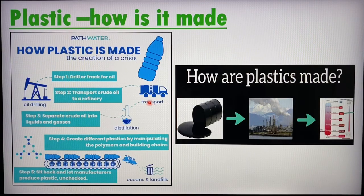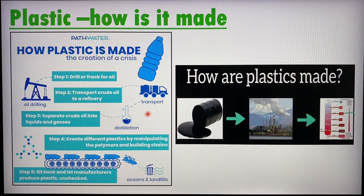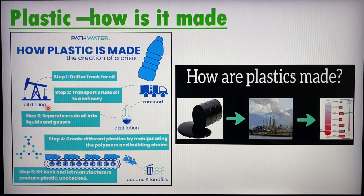Now, how is plastic made? Many students have asked me this and it's not exactly covered in school, so I decided to cover it here. First, we have to drill or get oil from the ground, and then the oil is transported to factories or industries where they do some processing to the crude oil, and then they create different kinds of plastics using that crude oil.